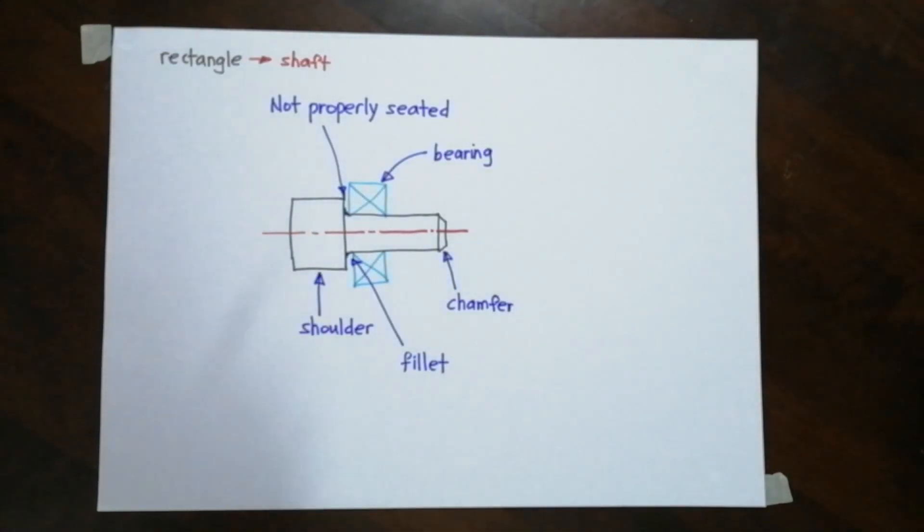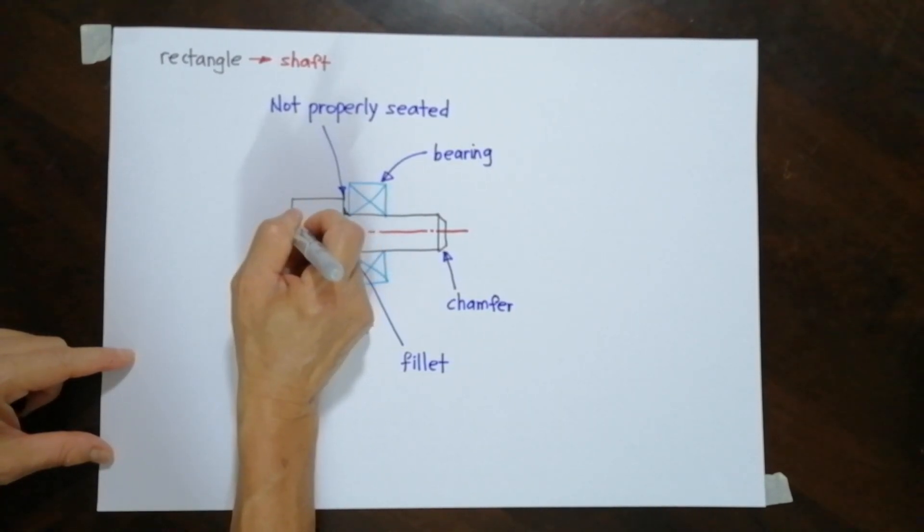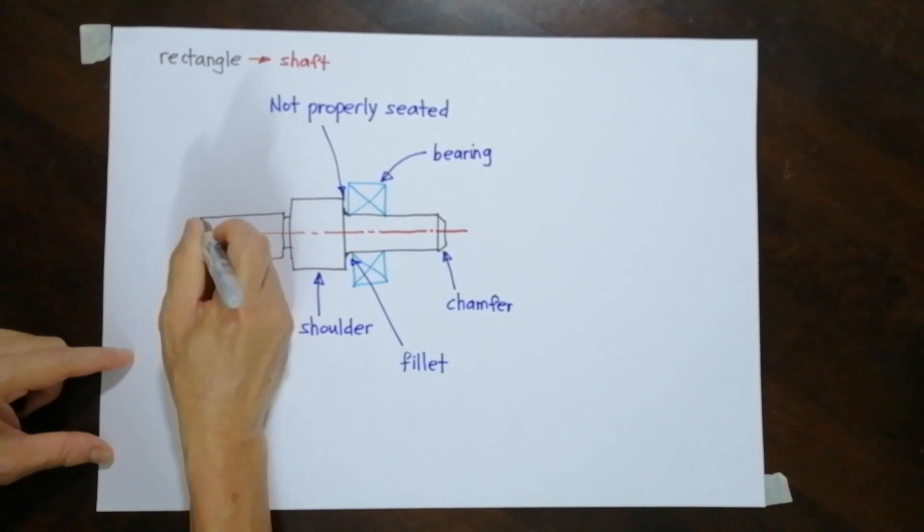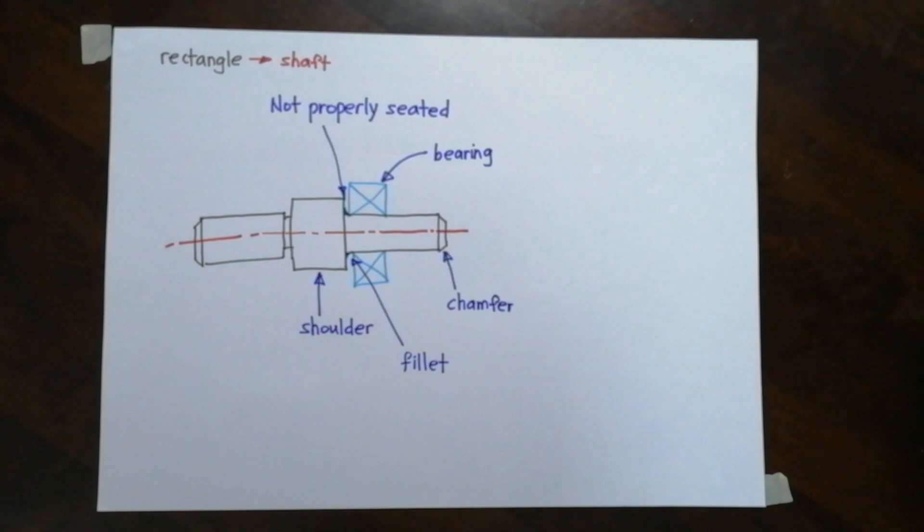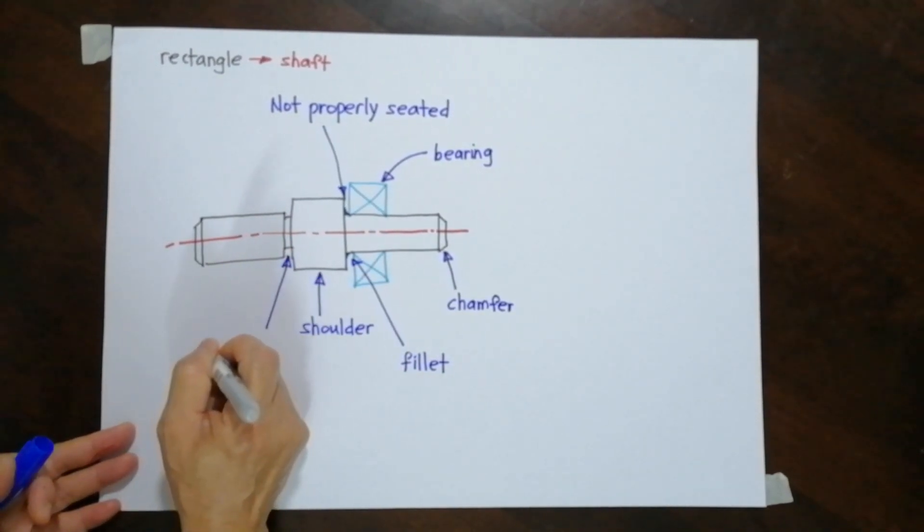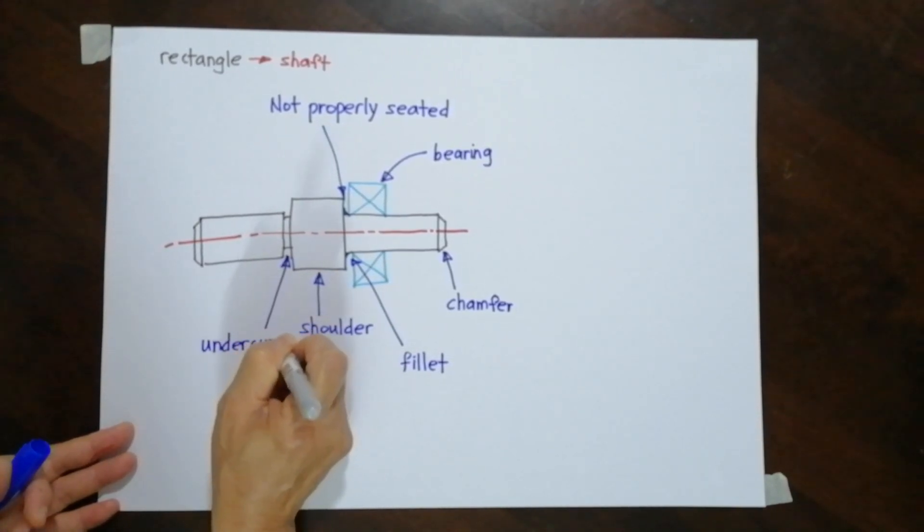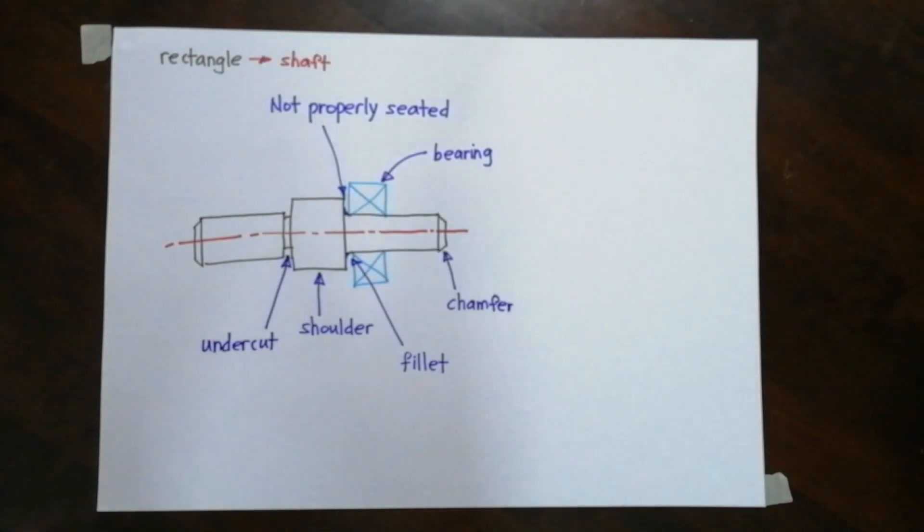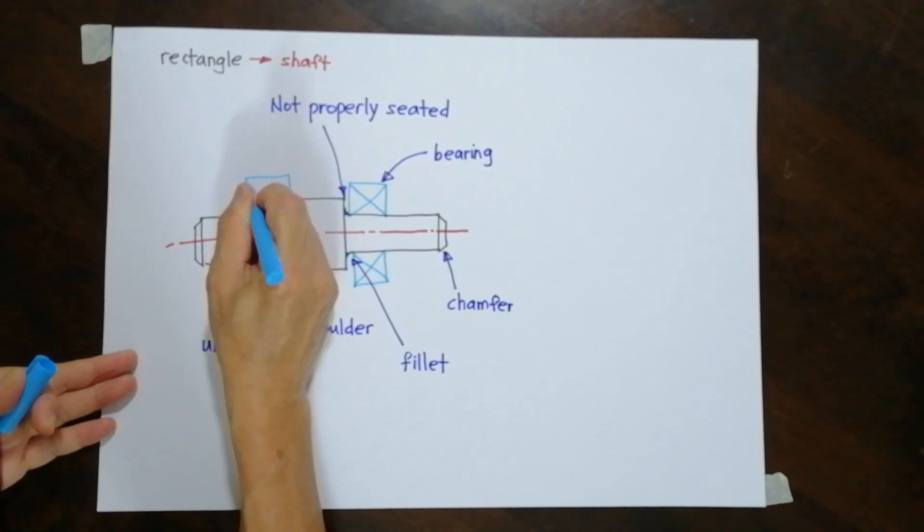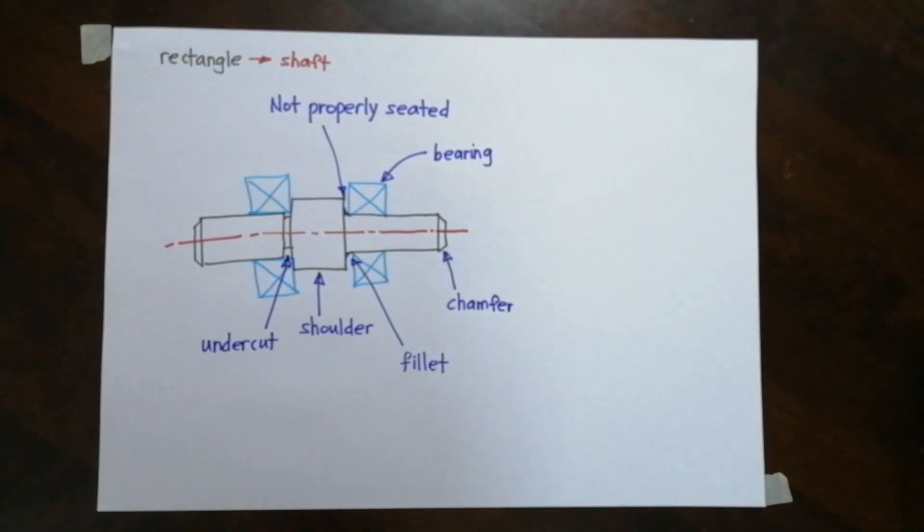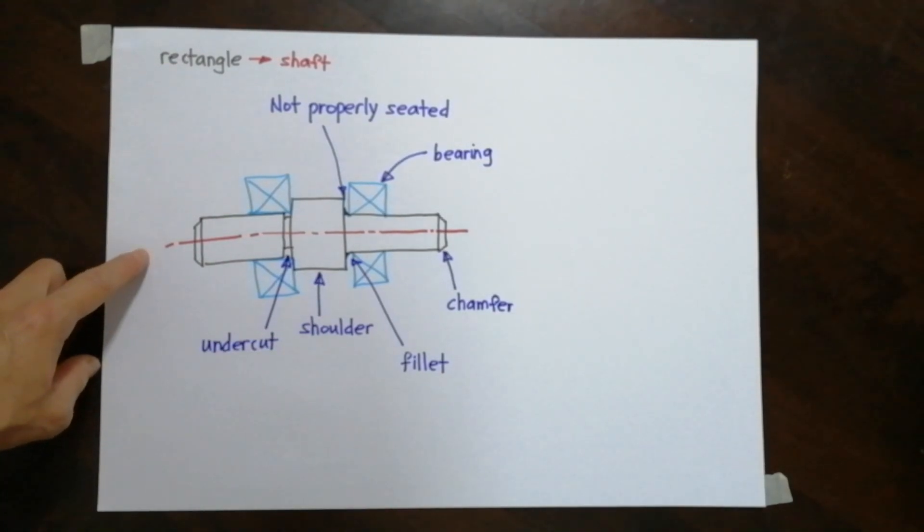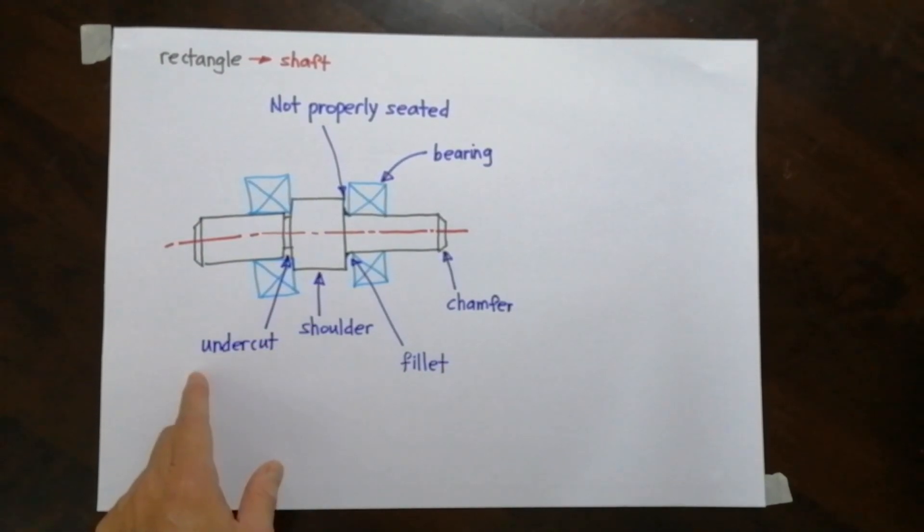So when we want to seat something to the shoulder, we need to have a small step here. Then we have the shaft diameter. I am going to extend the center line. The one that I just introduced has a name. It is called the undercut. And the purpose of the undercut is for the bearing to sit properly. So now let me draw the bearing. And that brings me to the end of all the features of the shaft. The shaft is round with the center line. You have a chamfer and there is a shoulder. There is an undercut and a fillet.